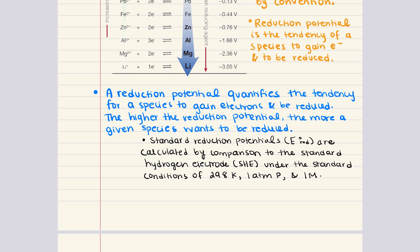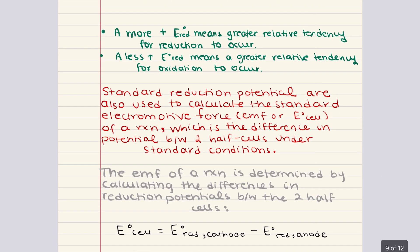In an electrolytic cell, which requires an external power source to drive a non-spontaneous reaction, the electrode with the more positive reduction potential is forced to act as the anode where oxidation occurs, and the electrode with the less positive reduction potential is forced to be the cathode where reduction occurs. Since the movement of electrons is against the natural tendencies of the electrochemical species, the reaction is non-spontaneous and delta G is positive. To obtain the oxidation potential of a given half reaction, you reverse the reduction half reaction and change the sign of the reduction potential.